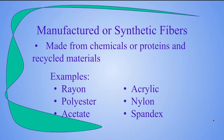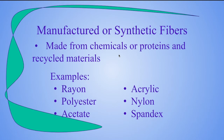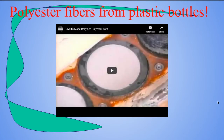Our synthetic fibers, sometimes called manufactured or man-made fibers, are fibers that we make from chemicals, proteins, and recycled materials. Examples of synthetic fibers include rayon, polyester, acetate, acrylic, nylon, and spandex. We made synthetic fibers to mimic our natural fibers in a process that's a little quicker and more sustainable than our natural sources. There is a video for the polyester fibers on the Canvas course — please watch that as well.